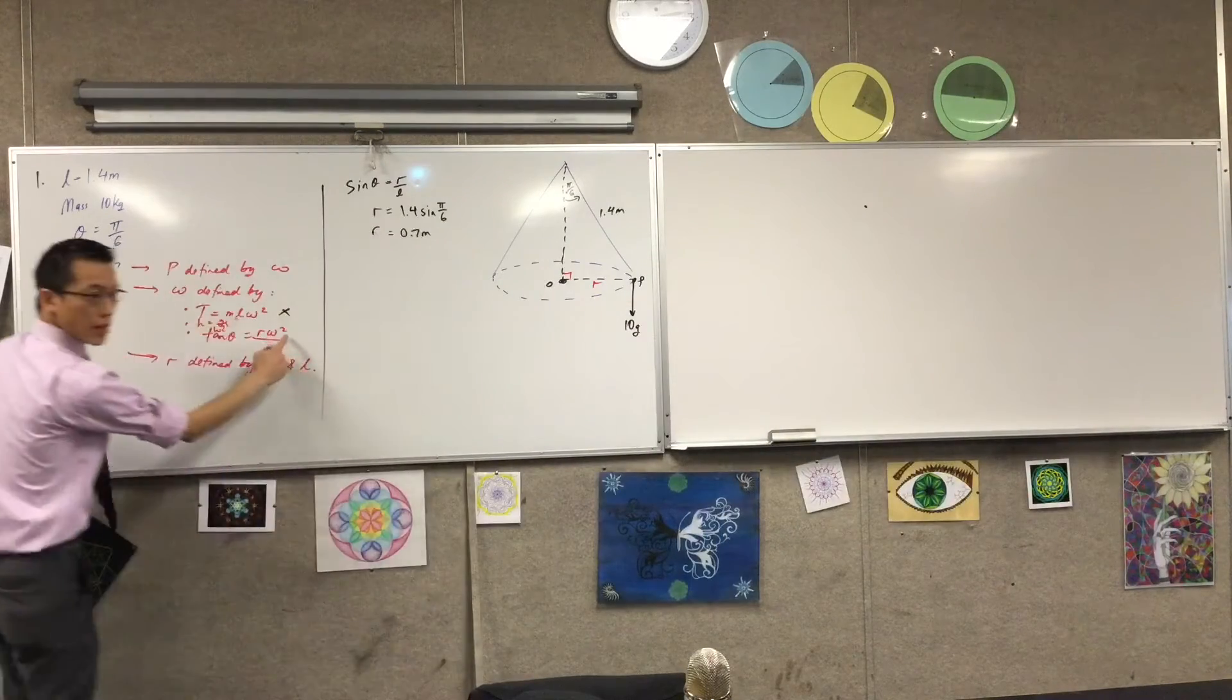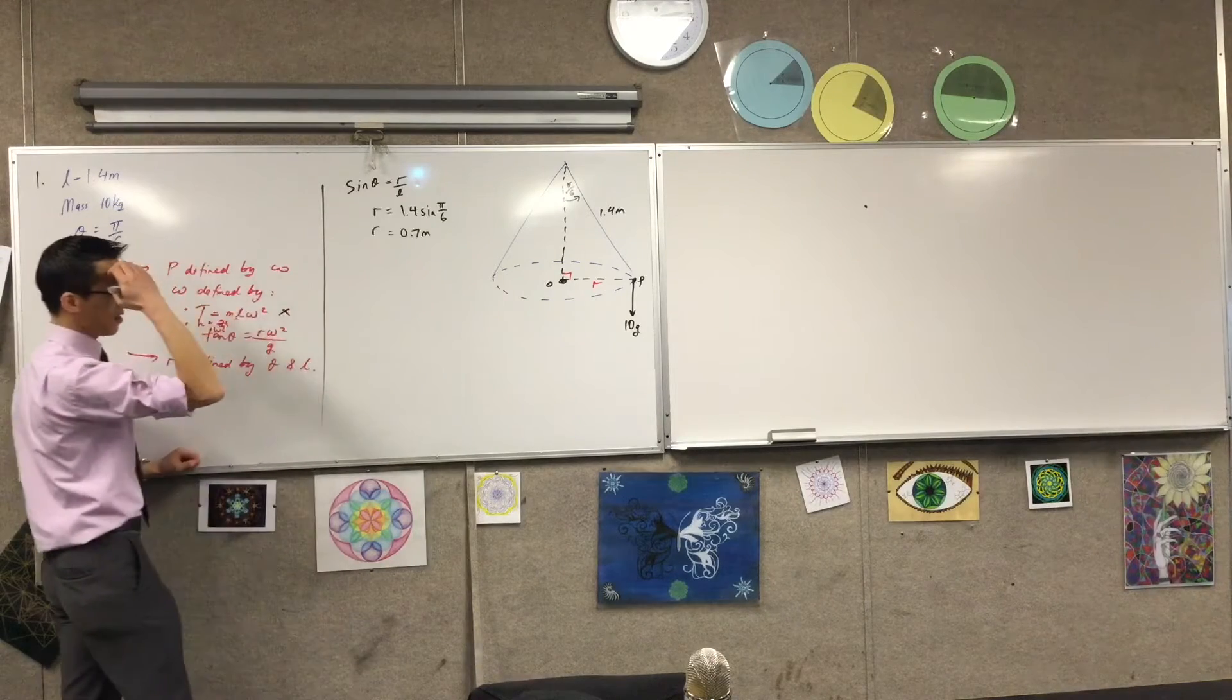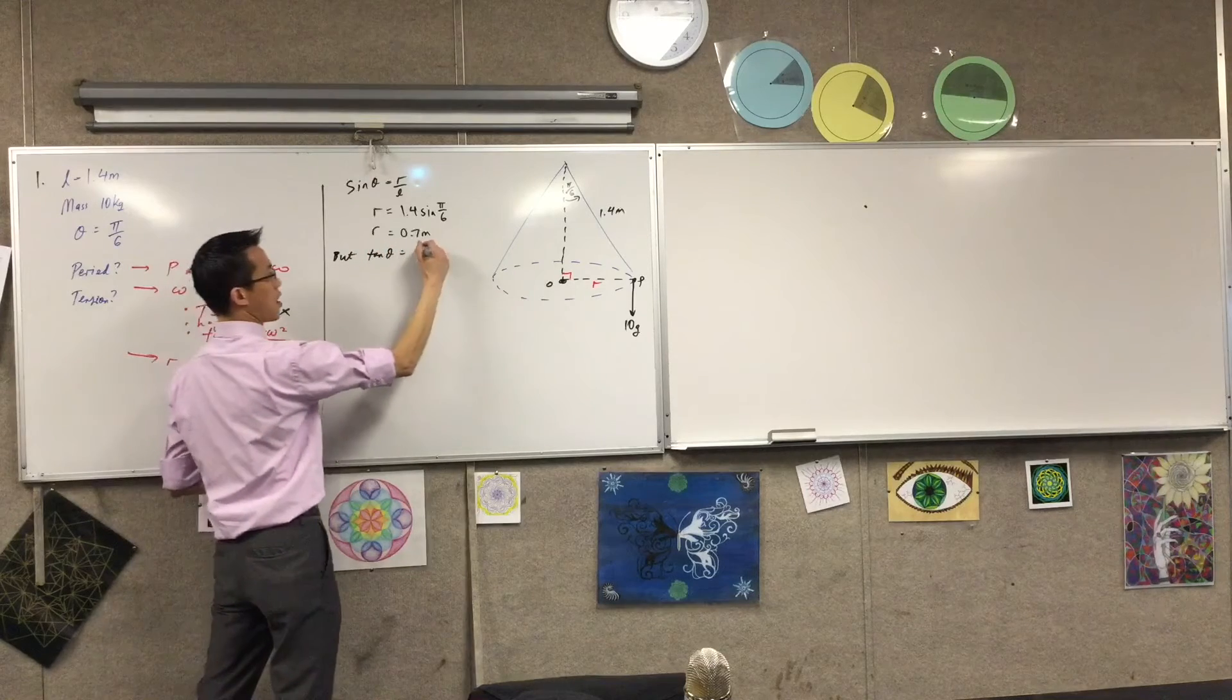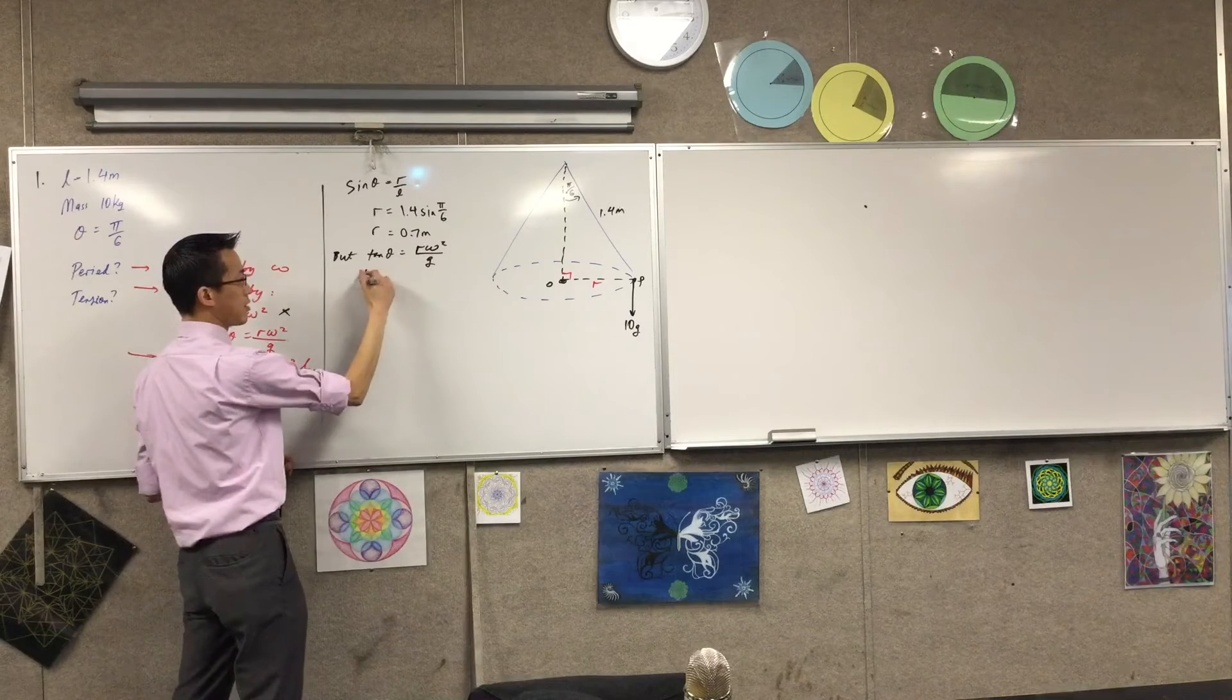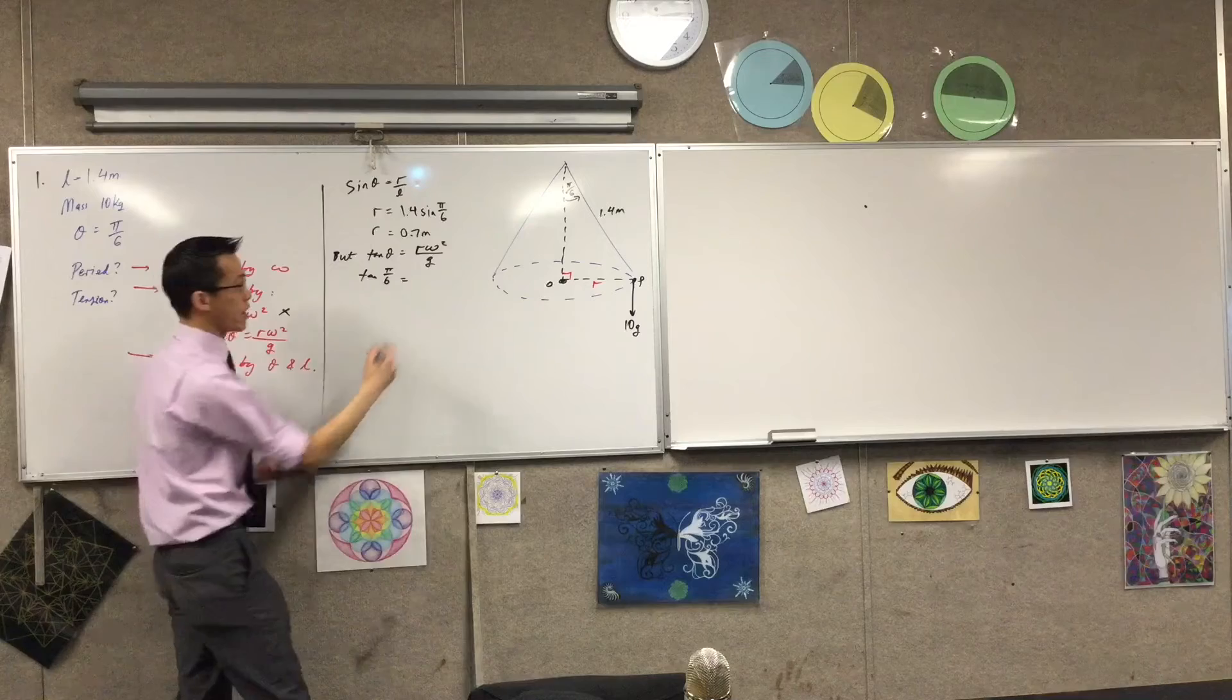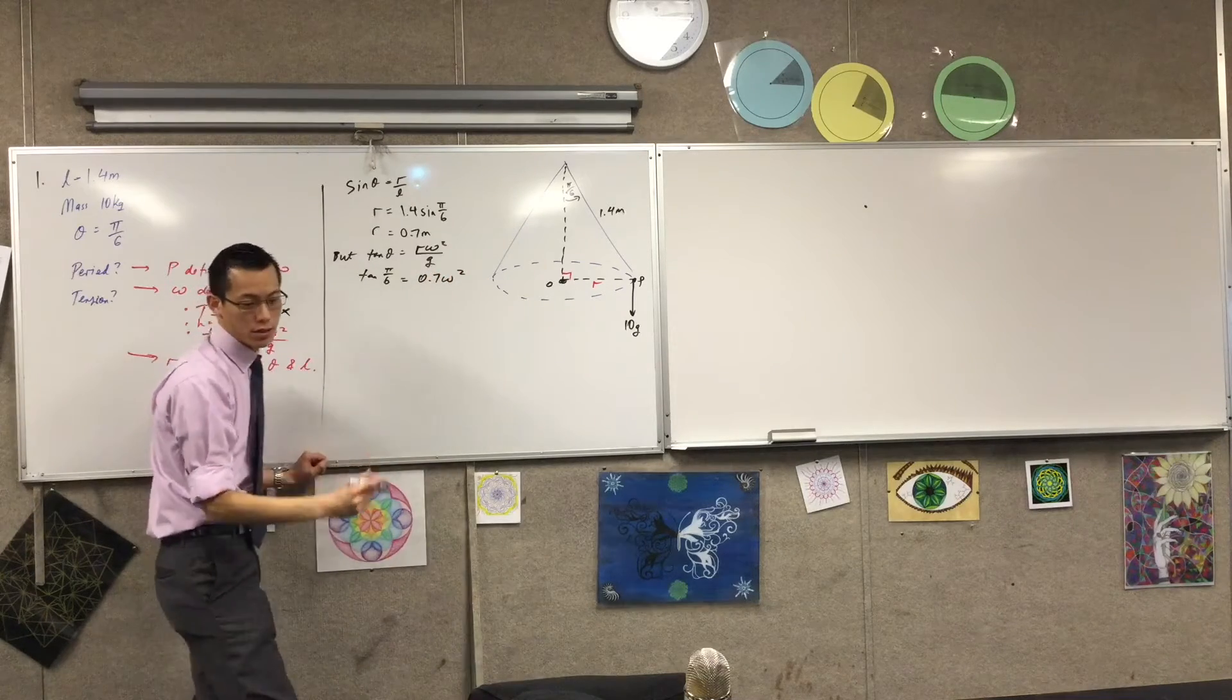I can pop that into this guy now, right? 10 theta equals blah, blah, blah. So I can say, but 10 theta equals R omega squared on G. So I know what theta is. It's 5 on 6. I just worked out what the radius was, 0.7. Omega is what I'm trying to find out, right?